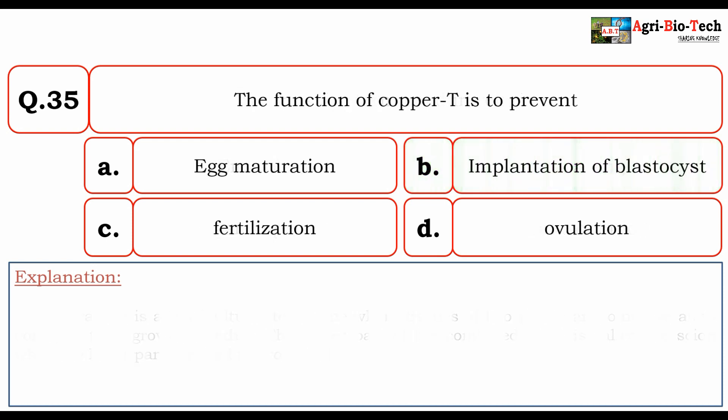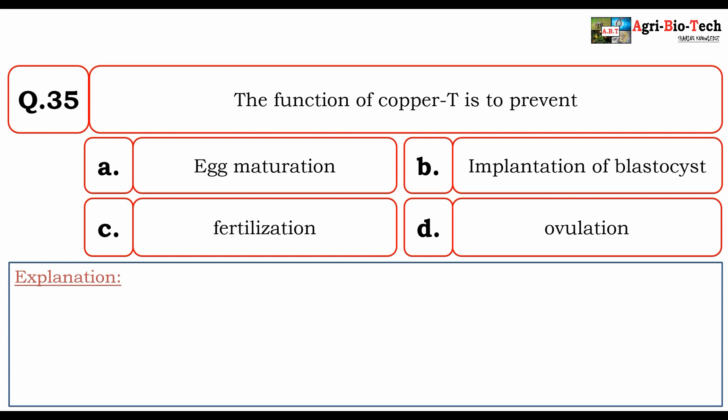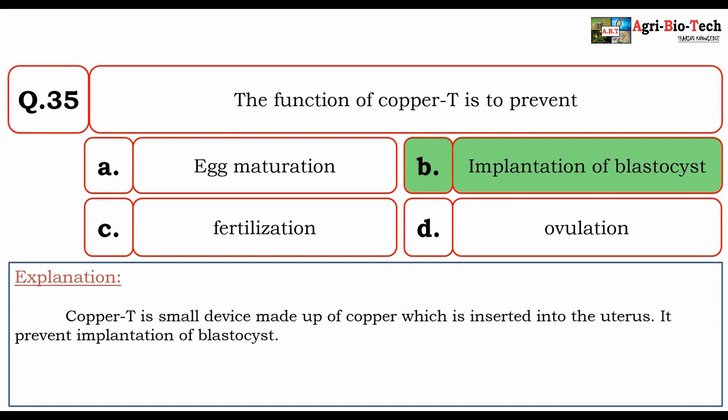Next question: the function of copper-T is to prevent — A) egg maturation, B) implantation of blastocyst, C) fertilization, or D) ovulation. The correct option is B) implantation of blastocyst. Copper-T is a small device made of copper which is inserted into the uterus to prevent implantation of the blastocyst.